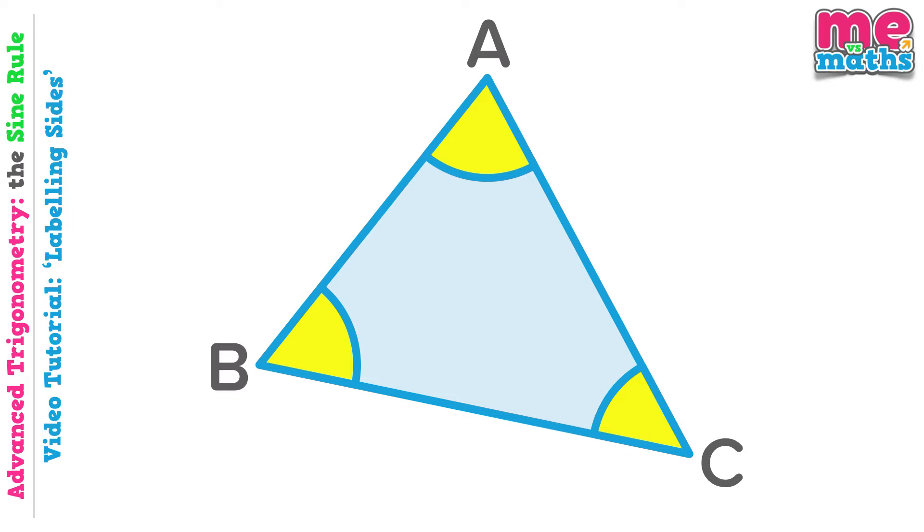Now not only do these capital letters refer to these points, they also refer to the angles at these points. So we'll call this angle, angle A, this angle, angle B, and you've probably guessed it, this angle, angle C.